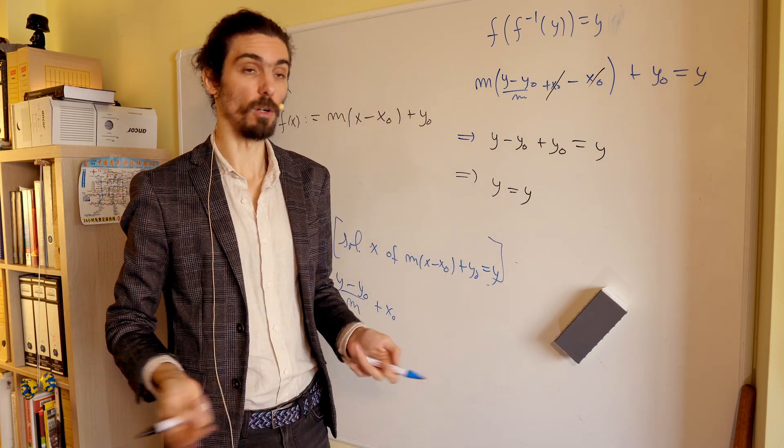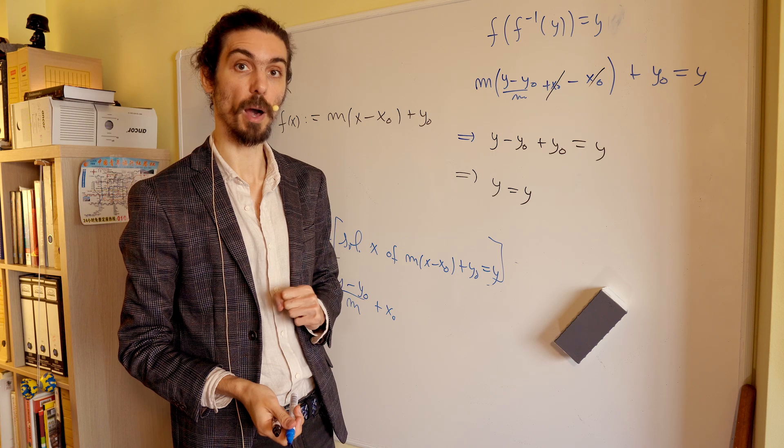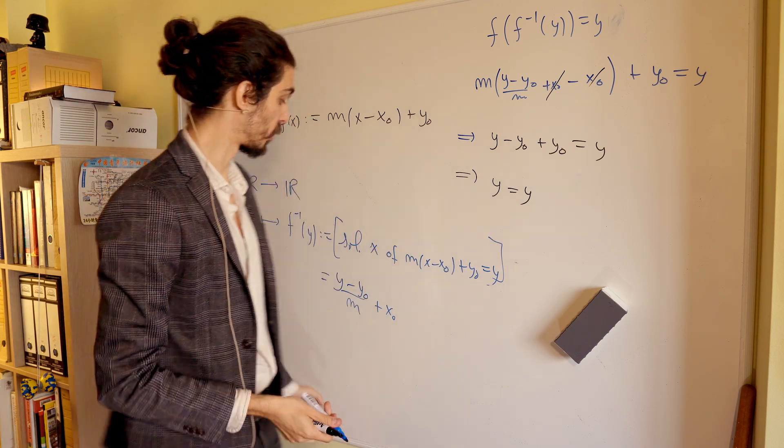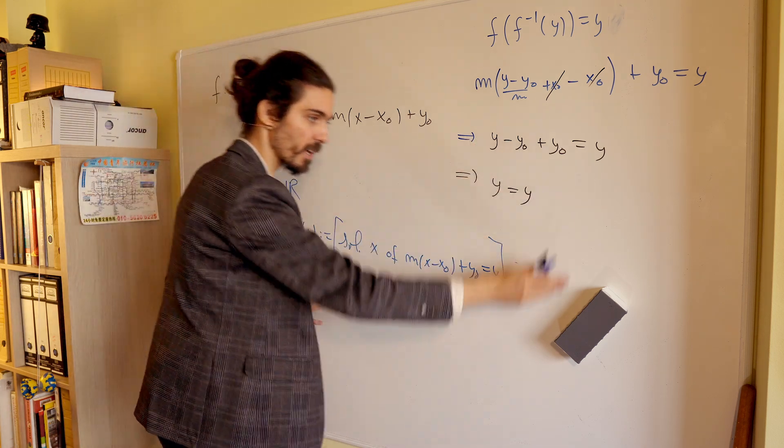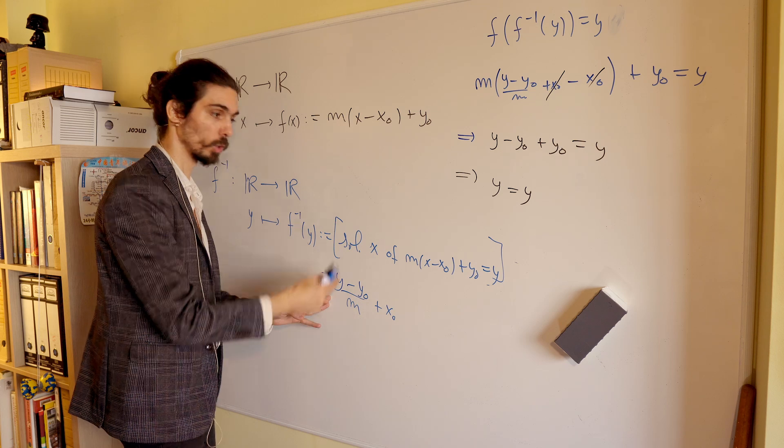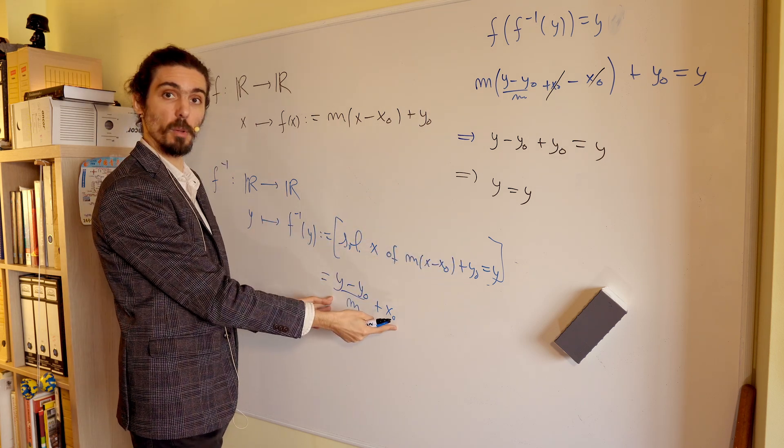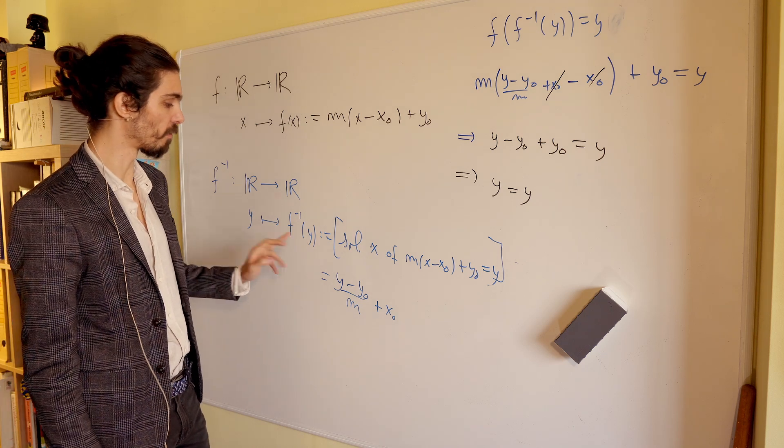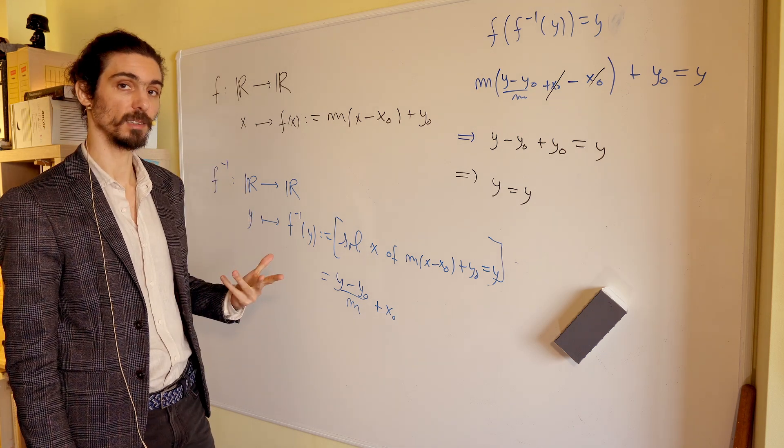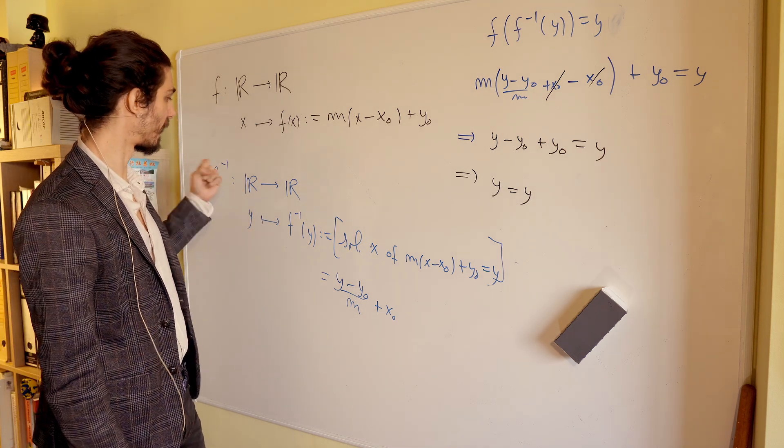Is it true, or is it false, that this thing is true for every y? Well, it's true. So, indeed, we did not make any mistake here in solving that equation here. And so, our formula is, indeed, correct. Okay? Our inverse actually undoes what f does.